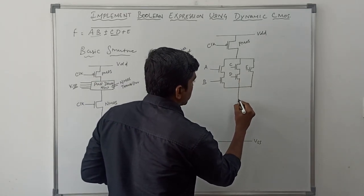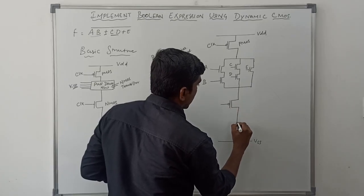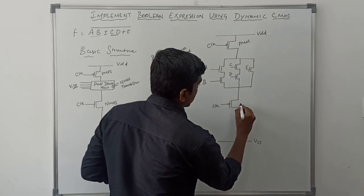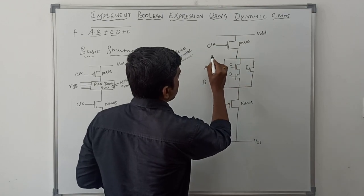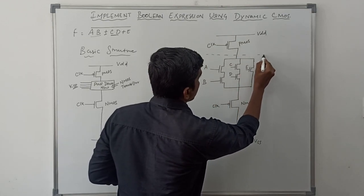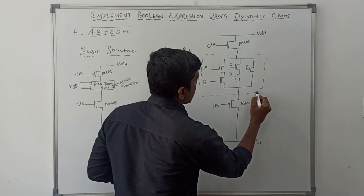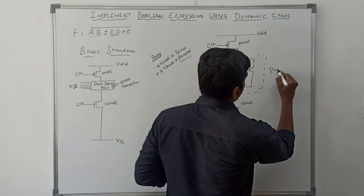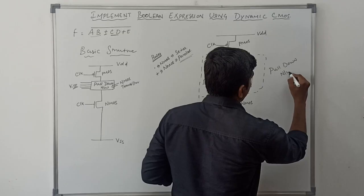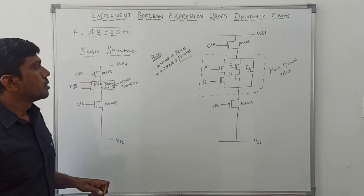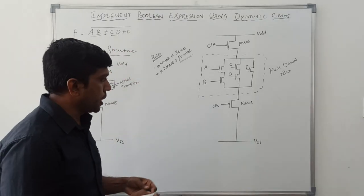Connection complete. Then connect the clocked NMOS transistor at the bottom. This block is called the pull-down network. So this is a simple way to draw the dynamic CMOS structure for the given boolean expression.